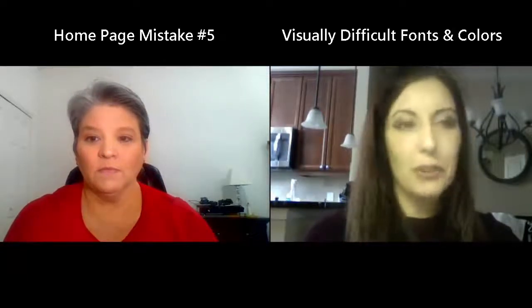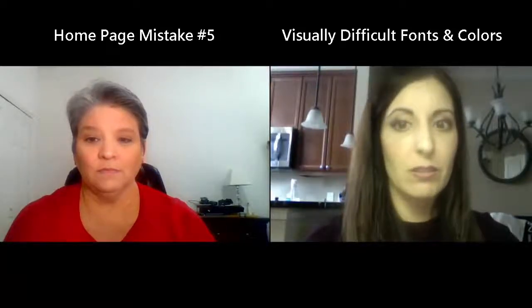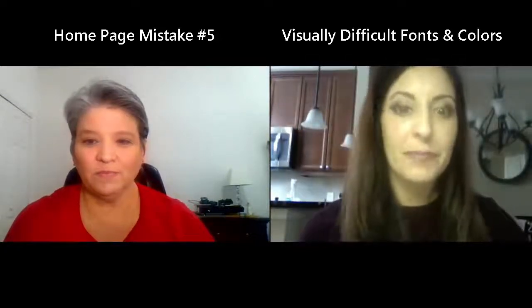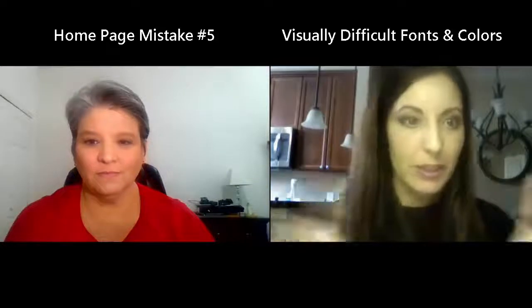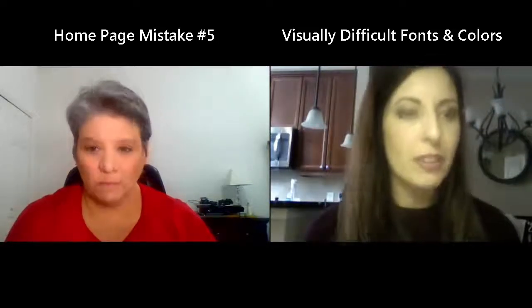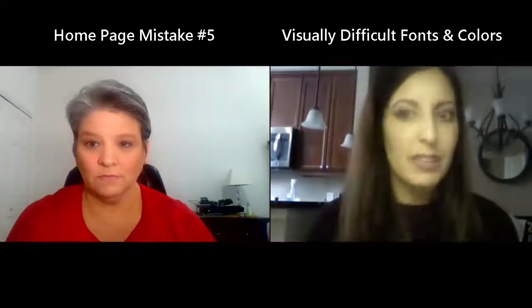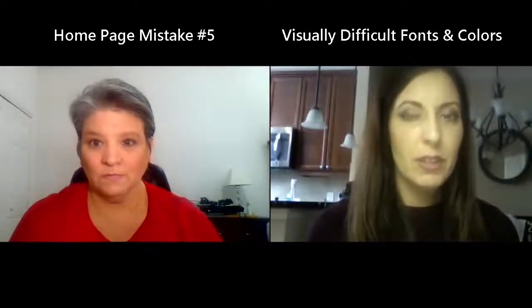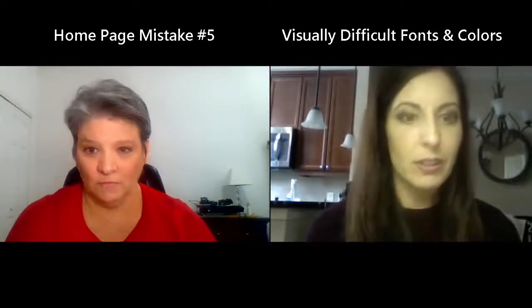Moving on to number five — the number five mistake people make: visually difficult fonts and colors. One thing we always advise is to use a sans-serif font — basically a font that doesn't have any little wings off of the letters. Like if you look at Times New Roman, it has the little wings. That's not a bad font as far as serif fonts go — it's not too visually complicated. But generally you want to stick with a sans-serif where the letters are just the letters and don't have any additional decoration on them.